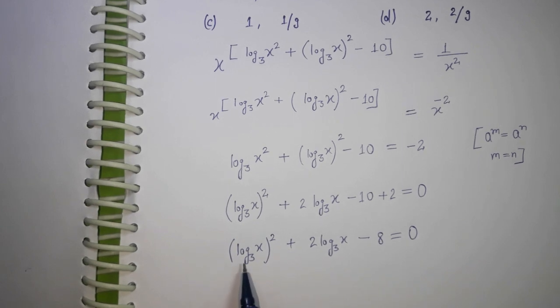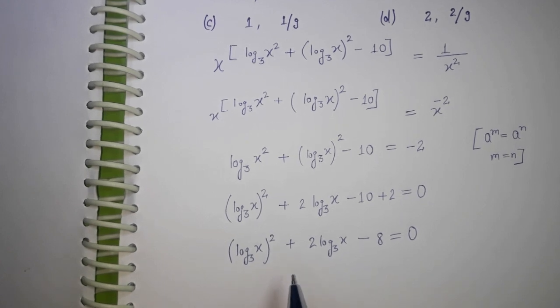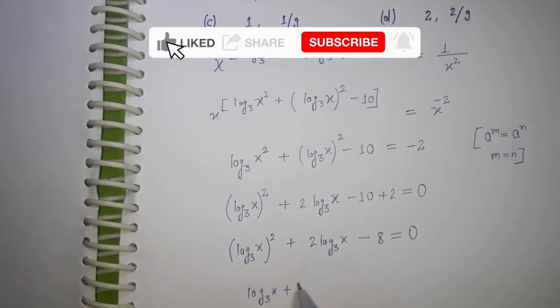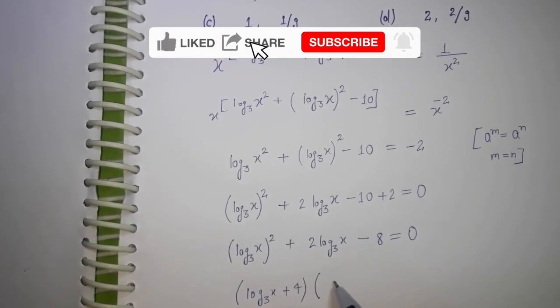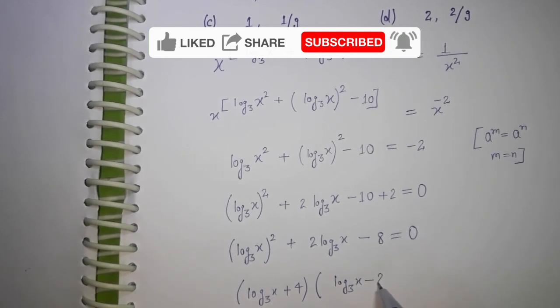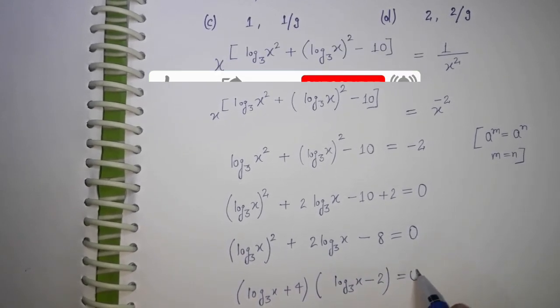We have the variable log₃x, so it's a quadratic equation. I'm going to factorize it. After factorization, we have (log₃x + 4)(log₃x - 2) = 0.